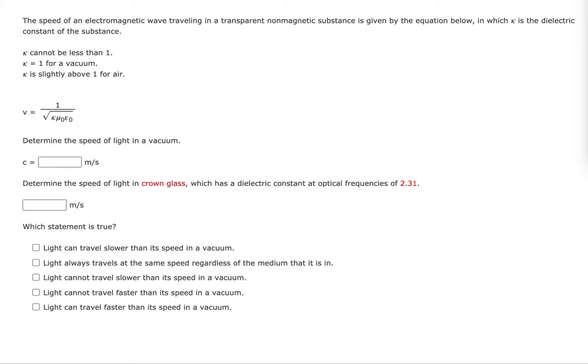First, let's go ahead and calculate what the speed of light is in a vacuum. So for that, we can use this formula, but for a vacuum, assume that kappa is 1.